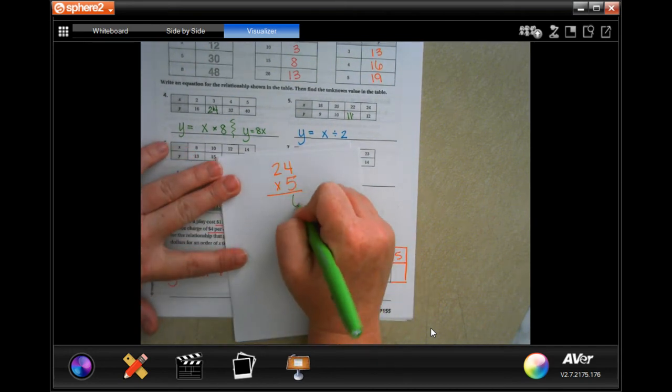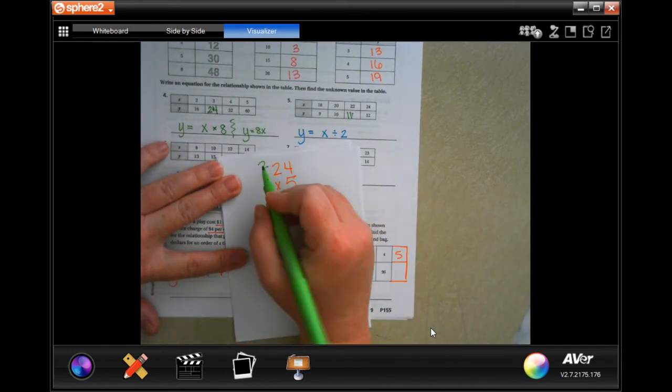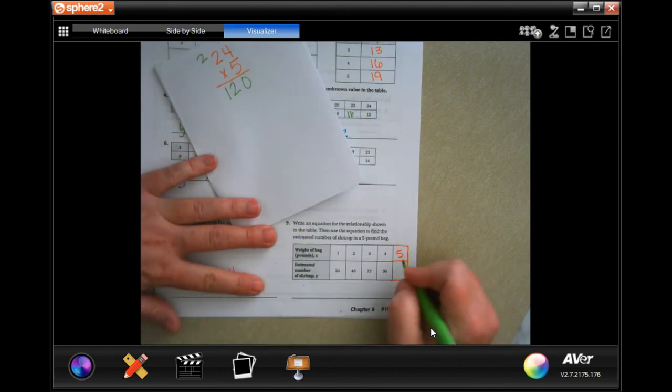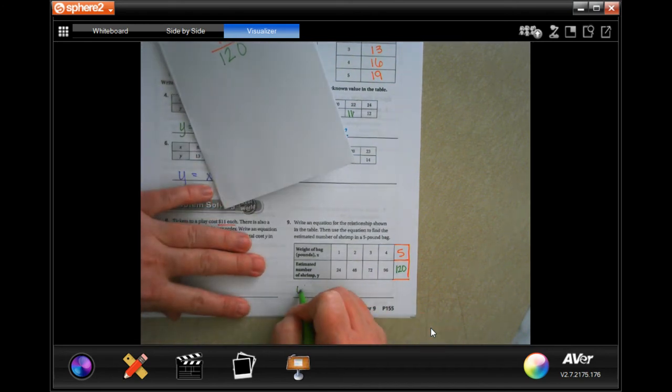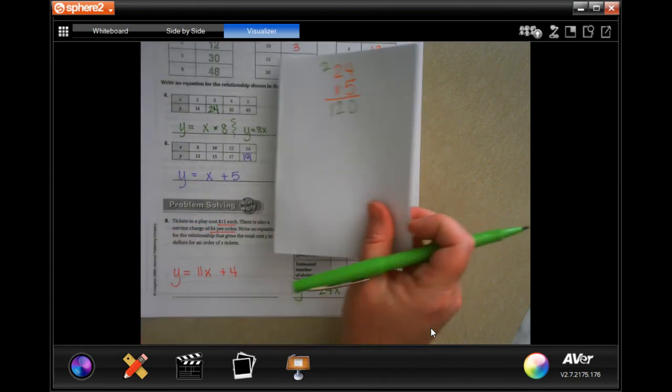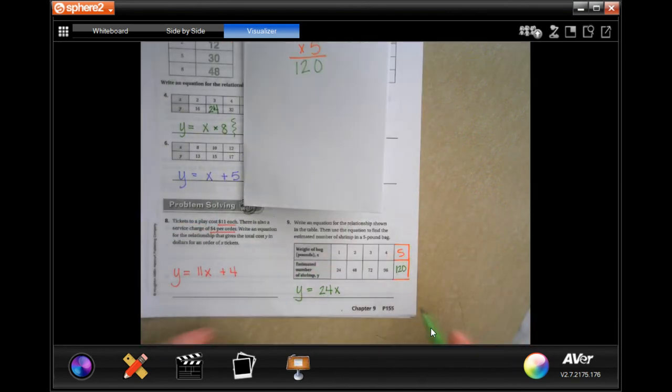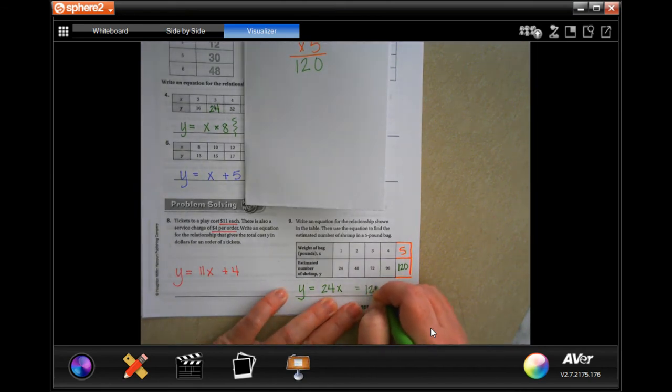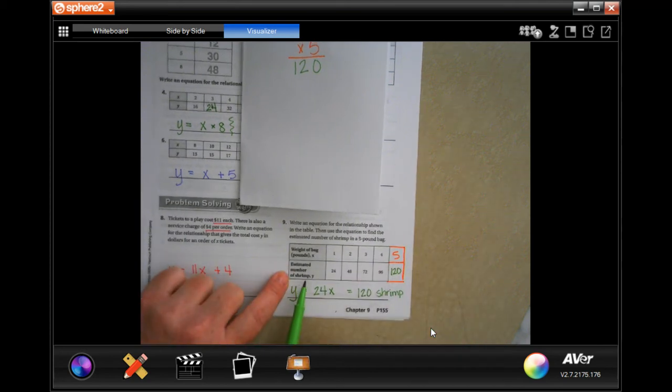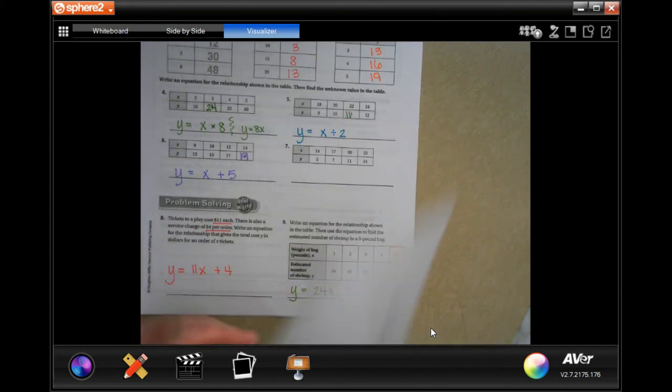5 times 4 is 20, carry the 2. 5 times 2 is 10 plus 2 more is 12, so 120. So we're going to say y equals 24x. It's 24 times whatever x is. Well x was 5, we got it guys. So equals 120 shrimp, it's talking about number of shrimp.